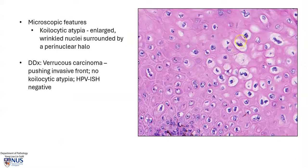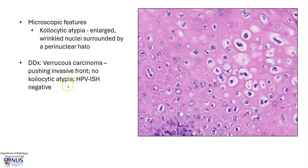Here we can see the koilocytic atypia with enlarged, wrinkled nuclei with irregular nuclear membranes surrounded by a clear perinuclear halo. One of the differential diagnoses is verrucous carcinoma, which is malignant. This tumor has a pushing, broad, invasive front, and on microscopy it does not show koilocytic atypia and HPV in-situ hybridization is negative. However, grossly it can appear quite similar with a cauliflower-like mass.